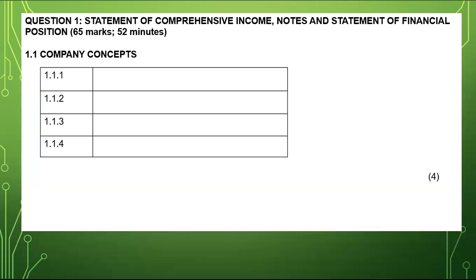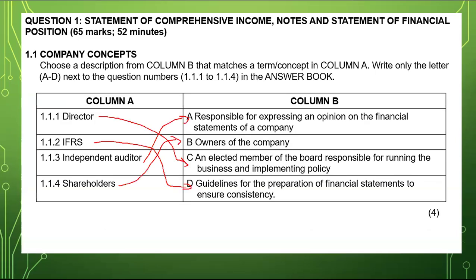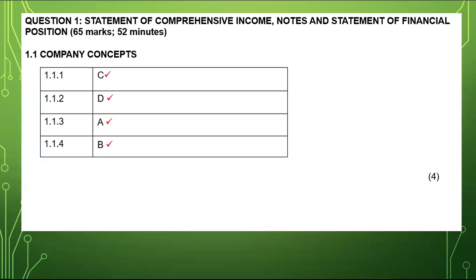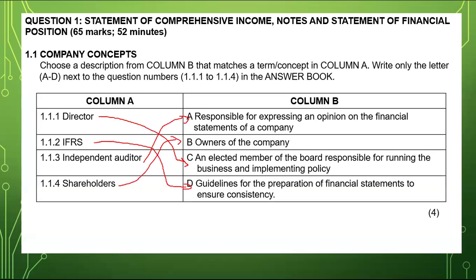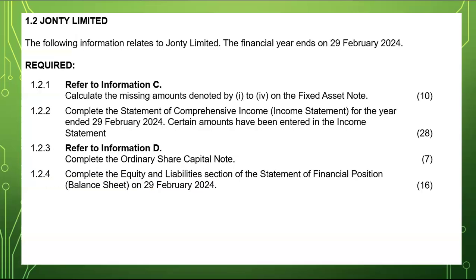So 1.1 will be C, 1.2 will be D, 1.3 will be A, and the last one, 1.4, will be B. Let me just confirm: C, D, A, B — yes, that's correct.